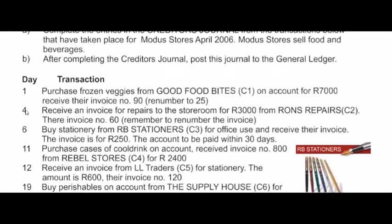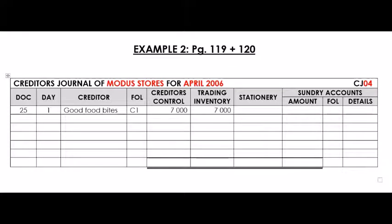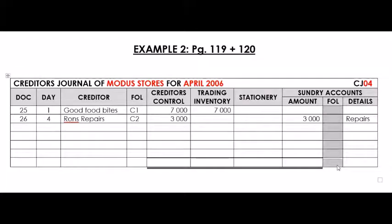The next transaction was on the 4th. We receive an invoice — these words indicate it's a CJ transaction — for repairs to the storeroom for 3,000 Rand from Ron's Repairs, creditor number 2. Their invoice number is 60, but we won't use that. We renumber the invoice to number 26. It's on the 4th, Ron's Repairs, creditor number 2. The value goes to Creditors Control, and since it was for repairs and there's no repairs column, we take it to sundry accounts — the repairs account — and reference the general ledger. Repairs is nominal account number 2.